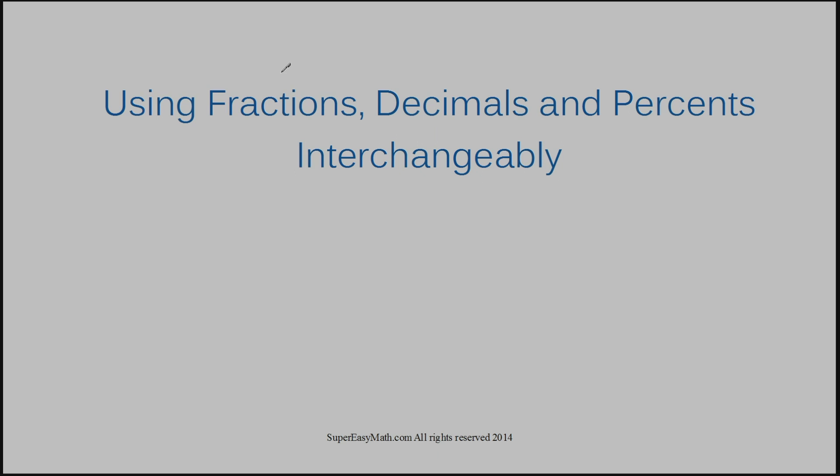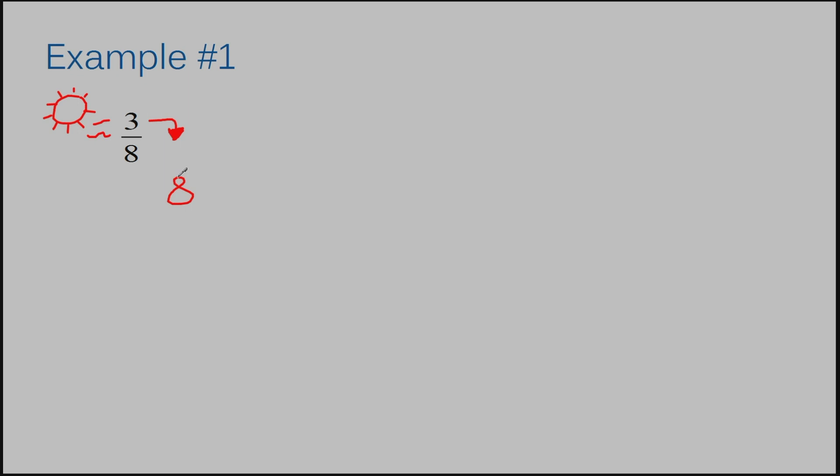Let's jump into example number one. We have three-eighths — this is a fraction. To turn a fraction into a decimal, all I need to do is divide the denominator into the numerator. I always told my students to think of it as being sunny and windy. The sun goes on the left side of the fraction, and the wind blows the top number over to the right. The bottom number was protected by the fraction bar. So this ends up looking like eight going into three. The top number always goes inside — it always gets blown over to the right.